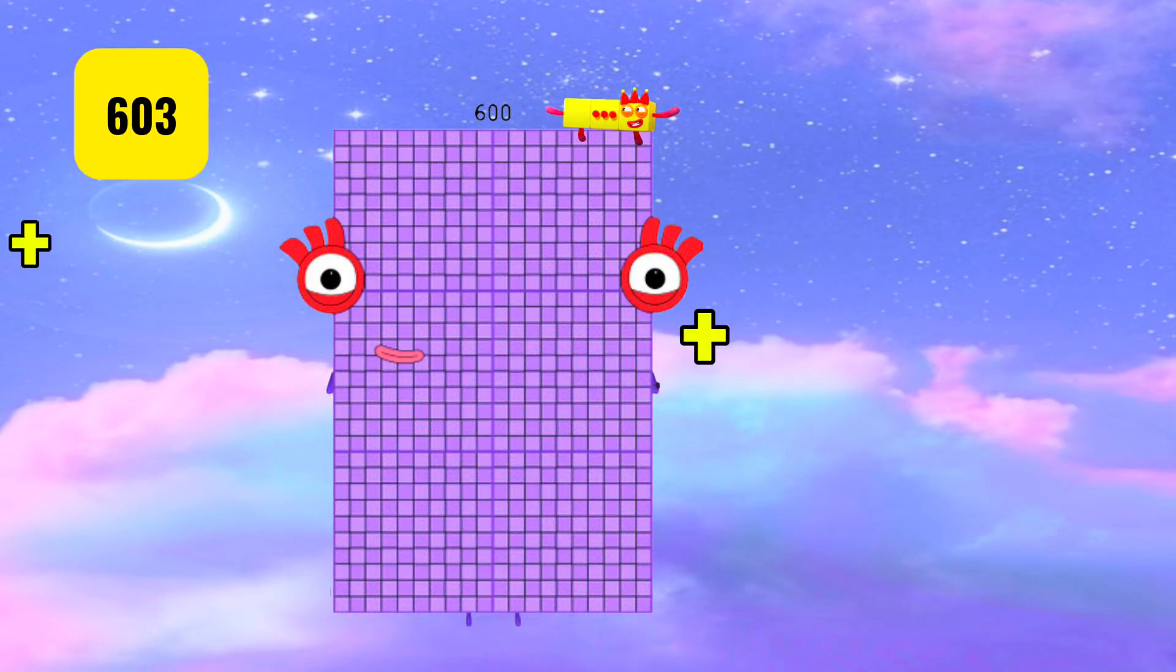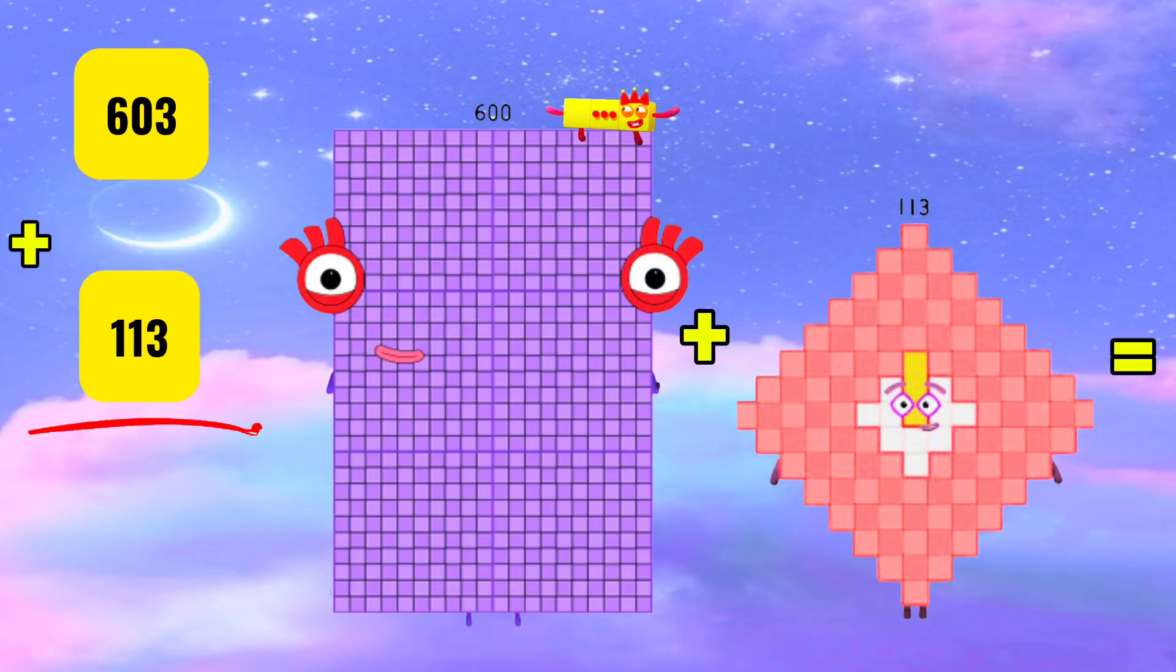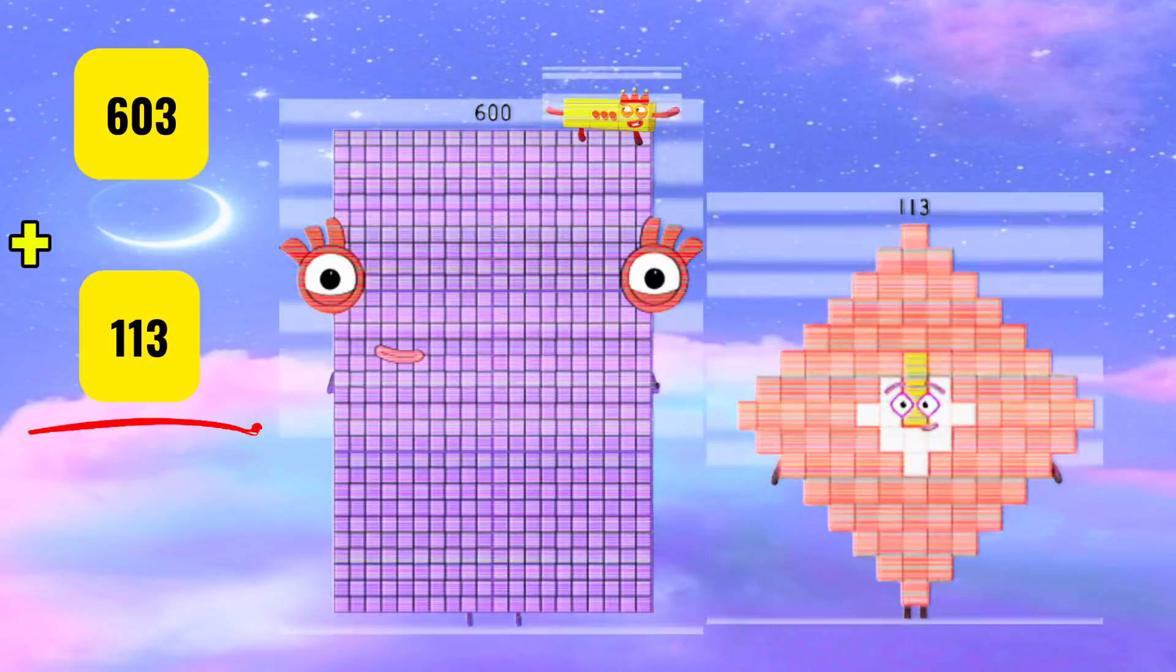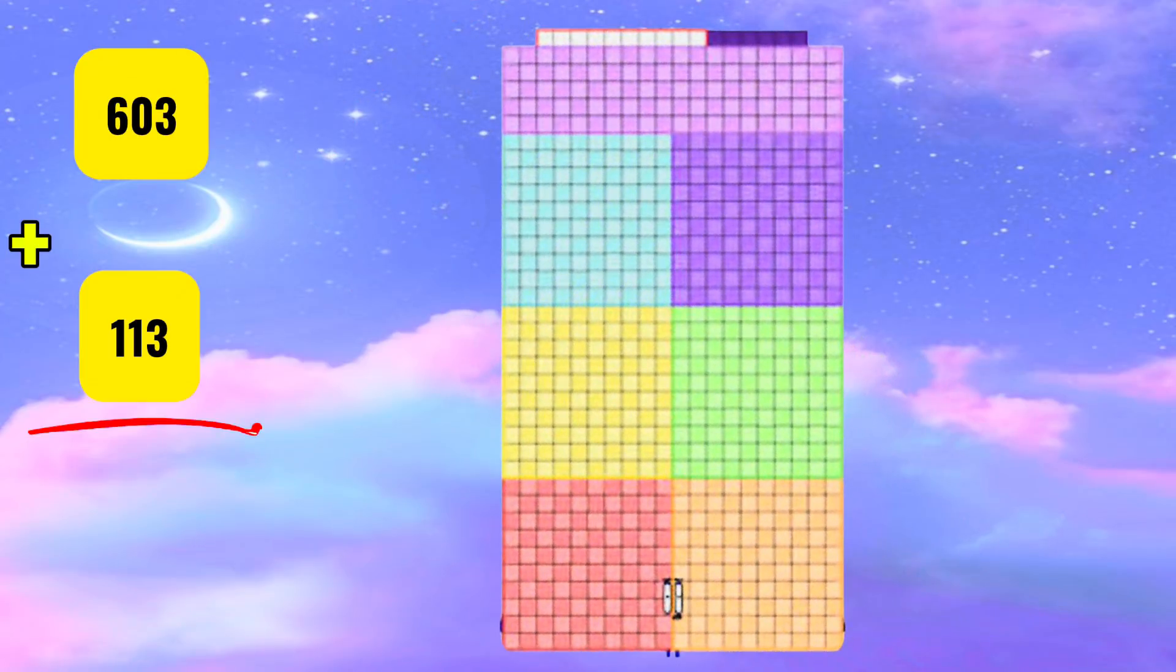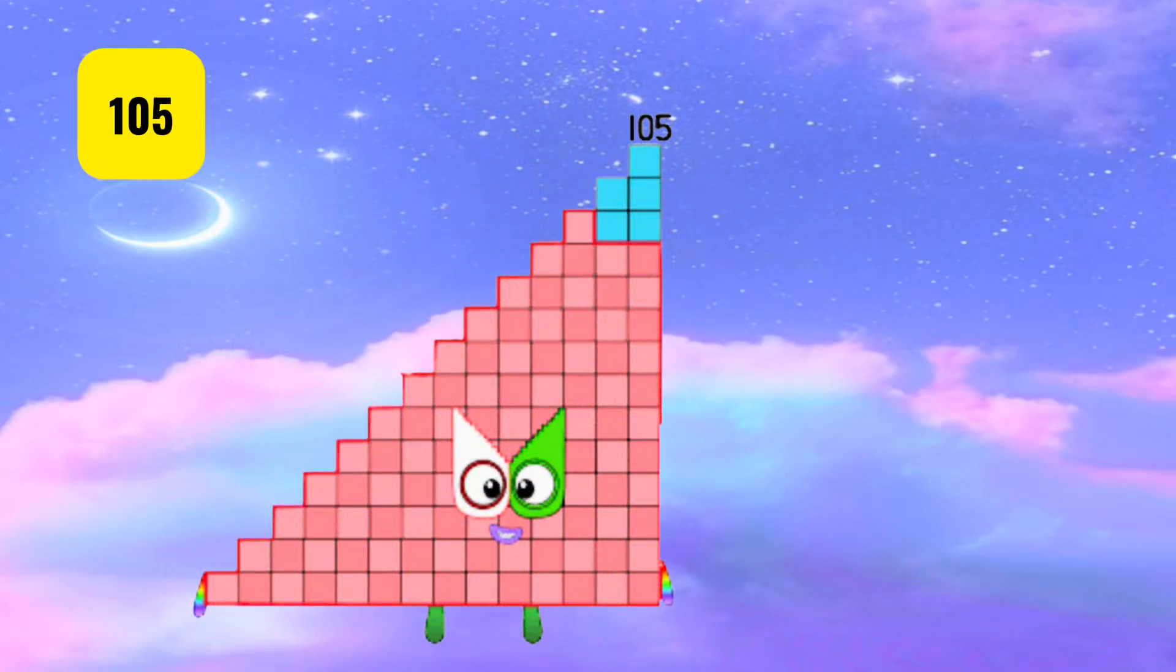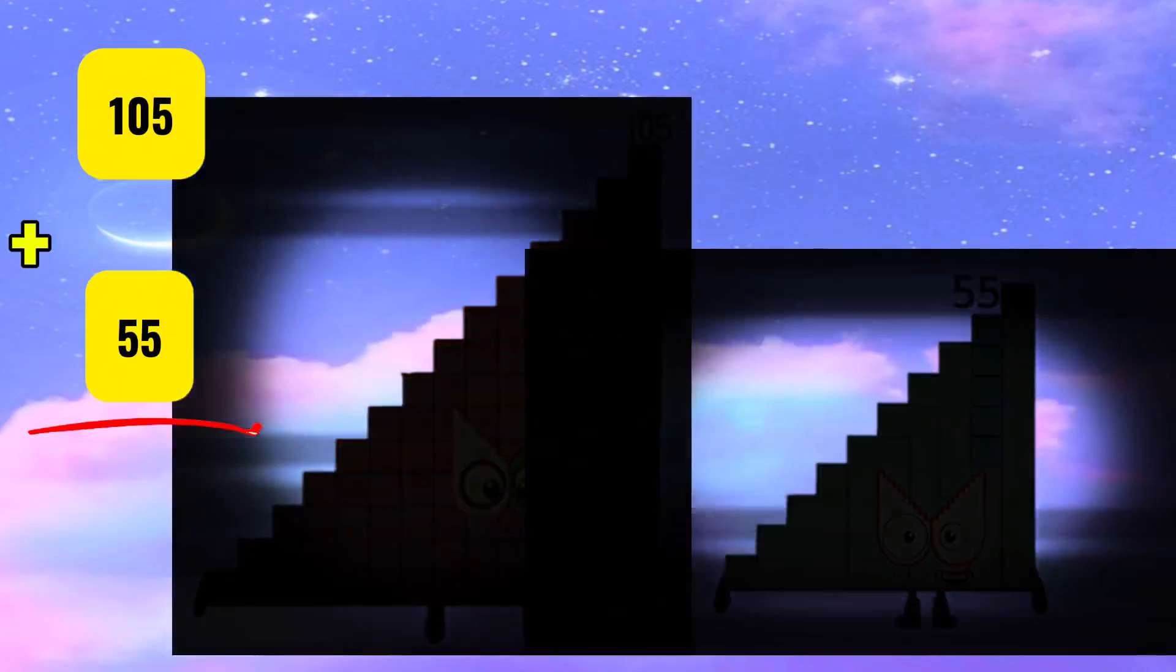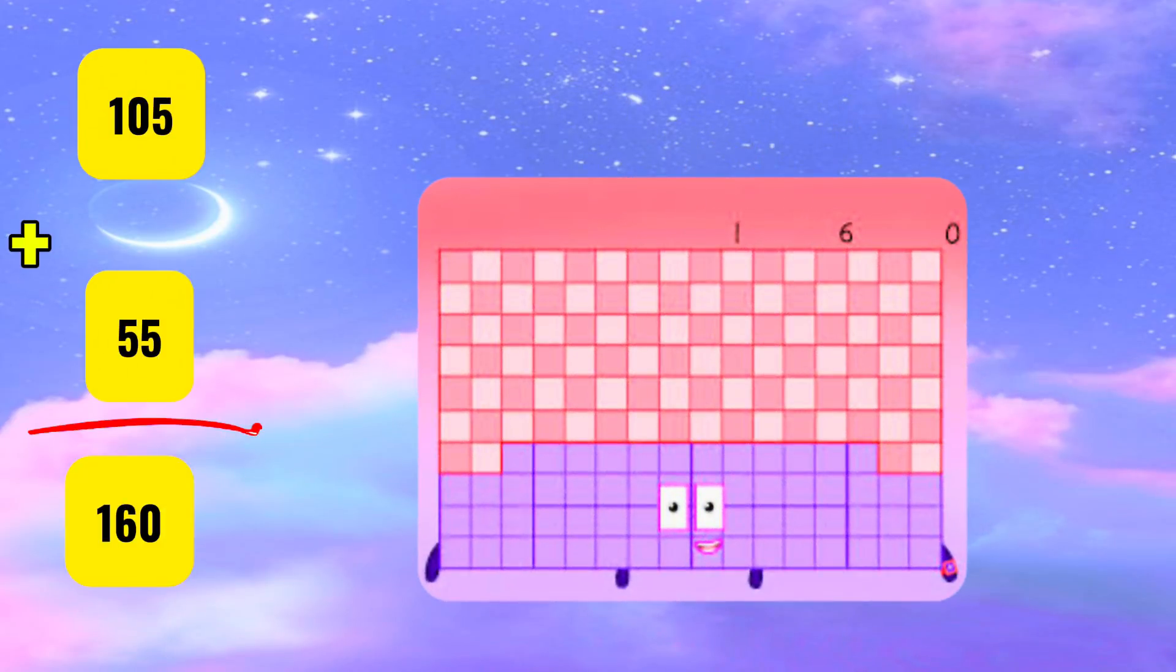603 plus 113 equals 716. 105 plus 55 equals 160.